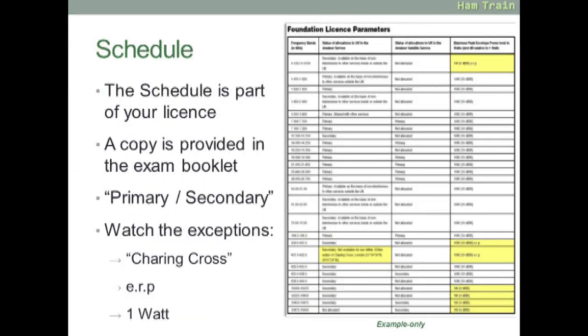Next, the schedule. You're given a copy of this in a four-page booklet for the exam. You'll find a list of frequencies amateurs are allowed to operate on. The second column shows the status, either primary or secondary. Column three shows whether the frequencies can be used for satellite, and column four shows the maximum power. On the screen, I've highlighted the exceptions. Note the restrictions about Charing Cross and references to ERP, effective radiated power.